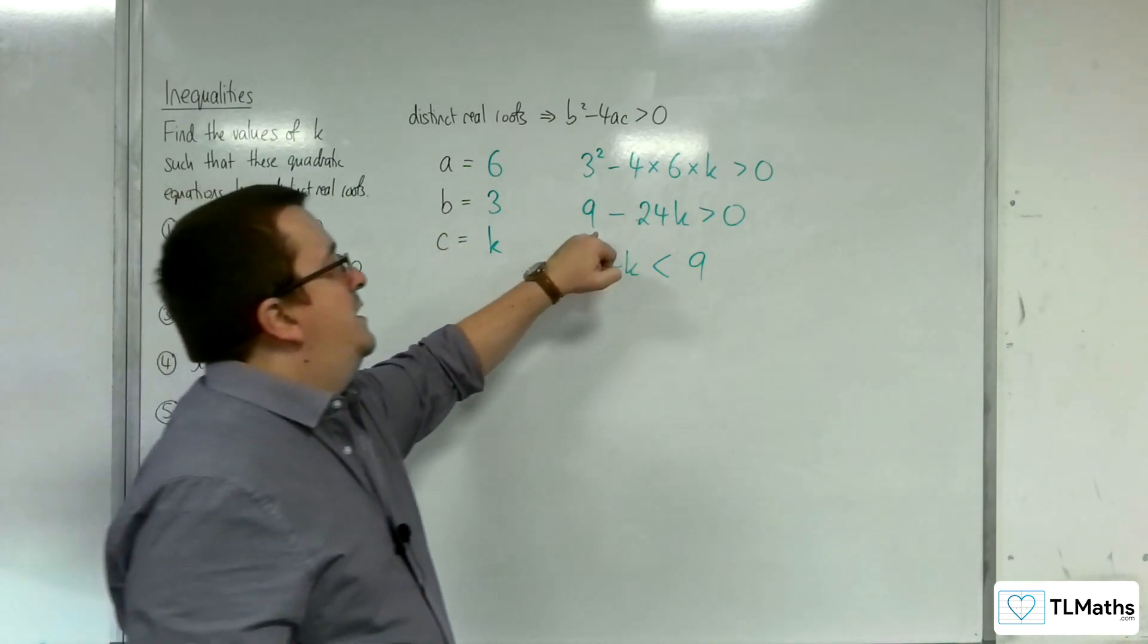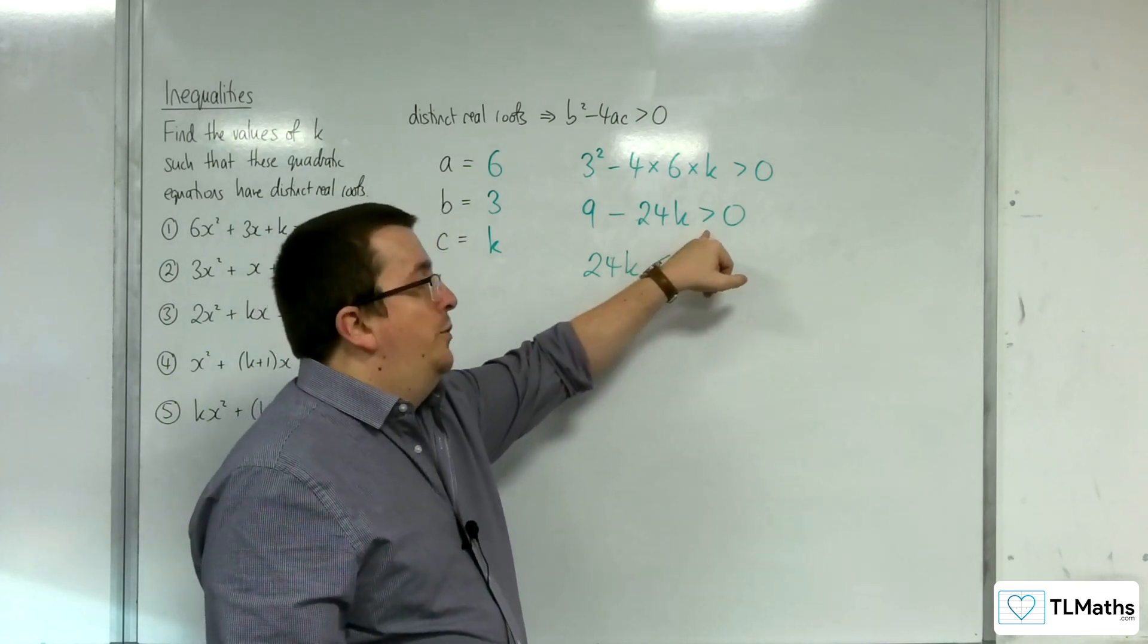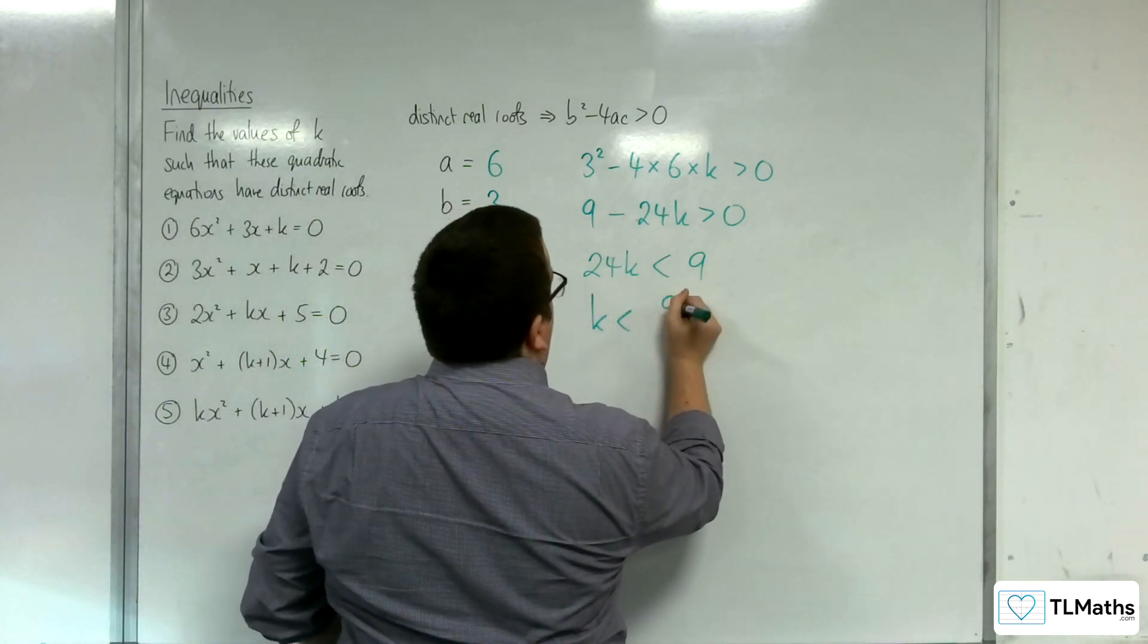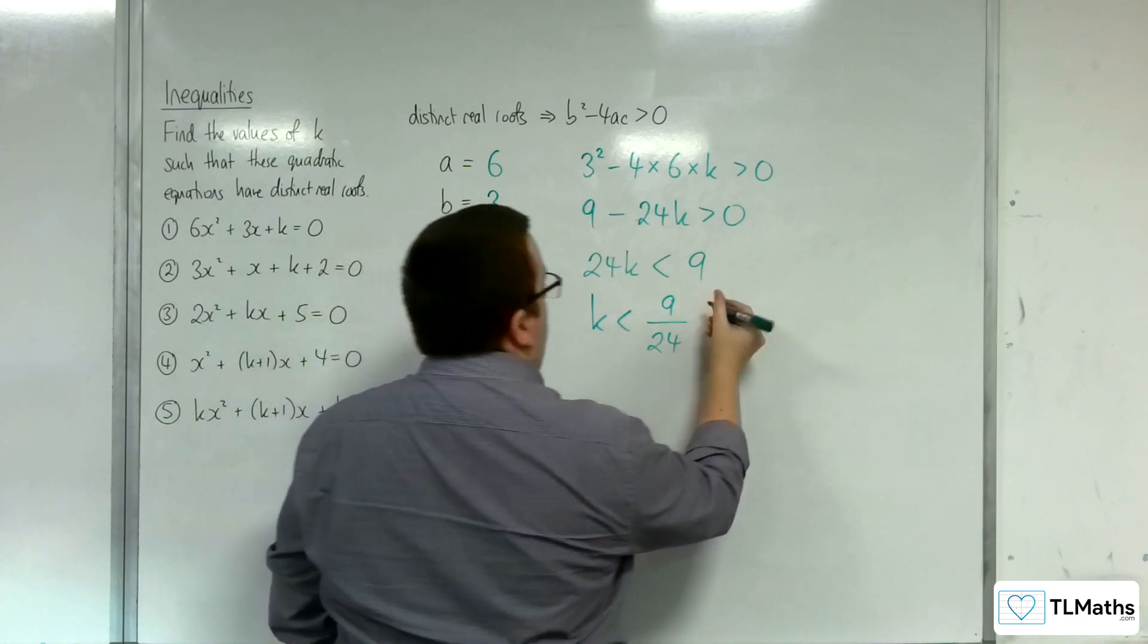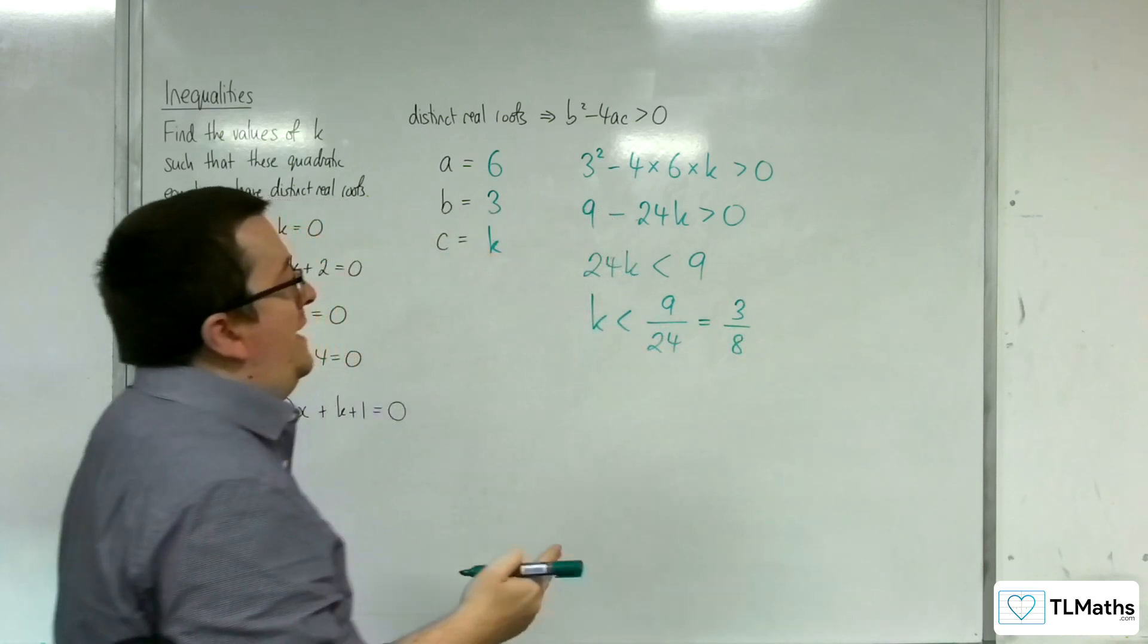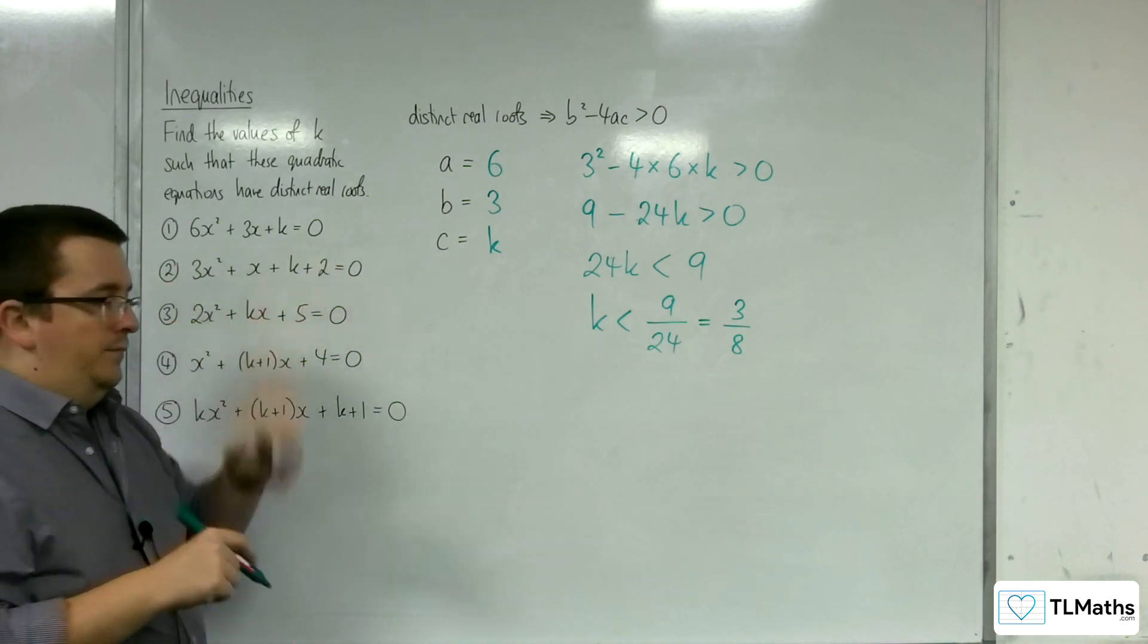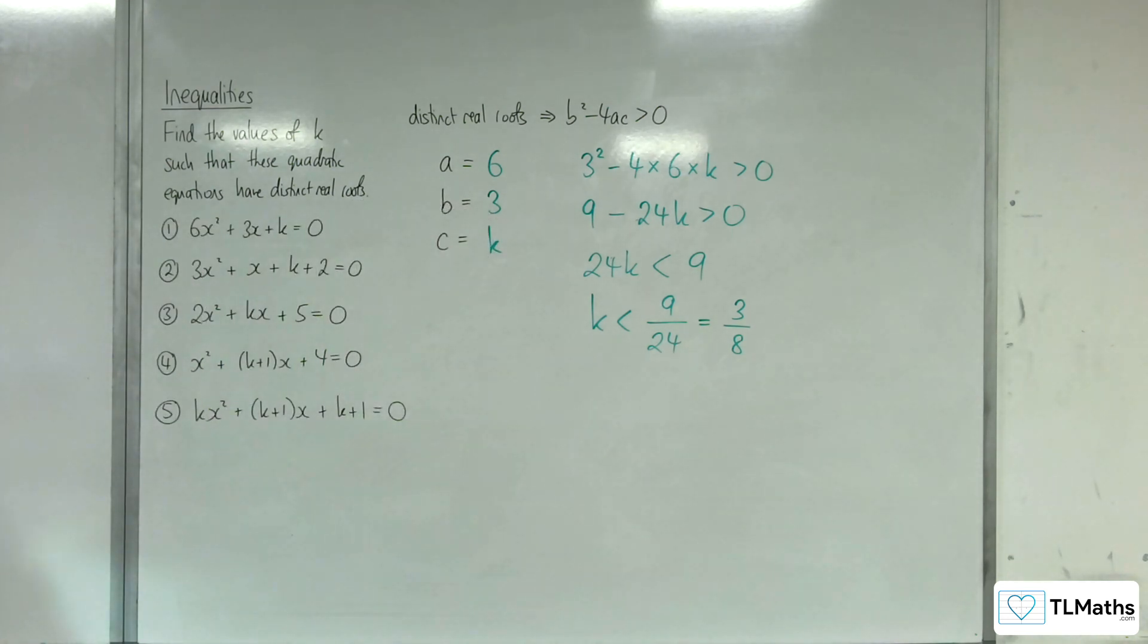The alternative to that is that you subtract 9 from both sides and then divide through by minus 1, which will flip the inequality symbol as well. Then k must be less than 9 over 24, which you can divide top and bottom by 3, so that's 3 eighths. So k would have to be less than 3 eighths in order for this to have two distinct real roots.